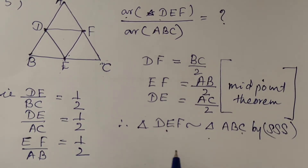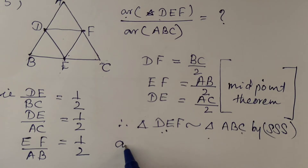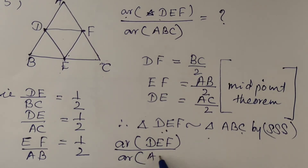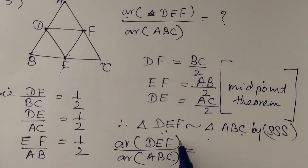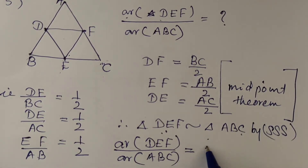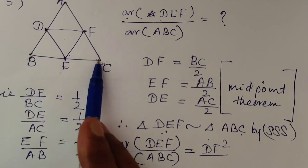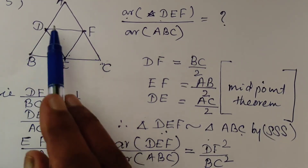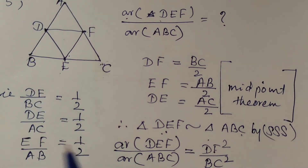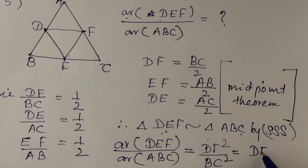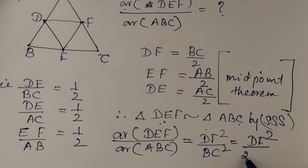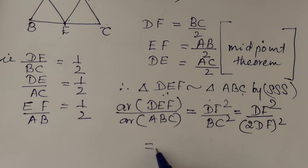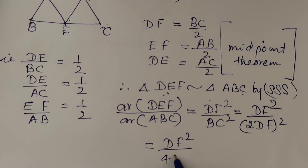Using the ratio of areas of two similar triangles, we can write: area of DEF divided by area of ABC equals DF squared divided by BC squared. Since DF is half of BC, BC equals 2DF. Substituting, we get DF squared divided by (2DF) whole squared, which equals DF squared divided by 4DF squared.